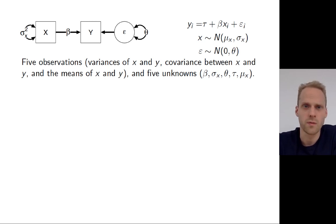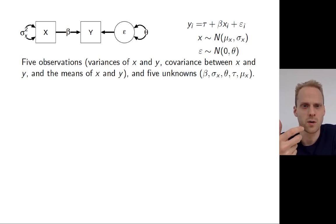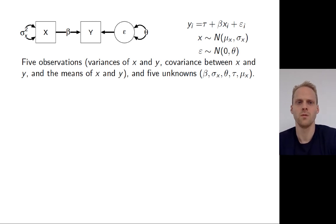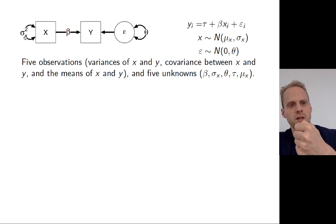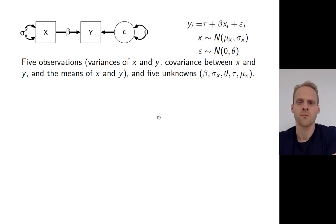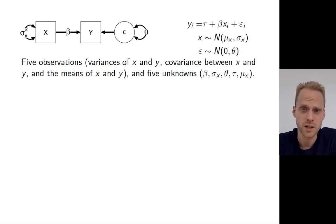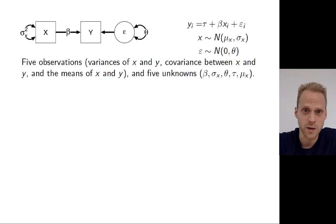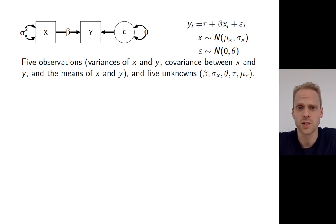We have five observations: the variance of X, the variance of Y, the covariance between the two, the mean of Y, and the mean of X. We also have five parameters: the variance of X, the mean of X, beta, the intercept tau, and the variance of the residual. Five unknowns means we have a saturated model, which means we can estimate these parameters by looking at the implied variance structure and the implied mean structure, and then optimizing our parameters so the implied structure most closely resembles the observed structure.